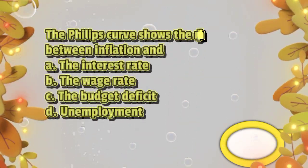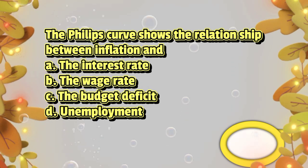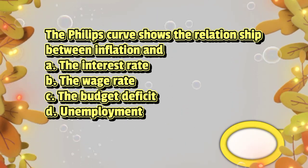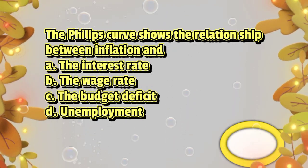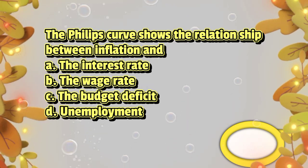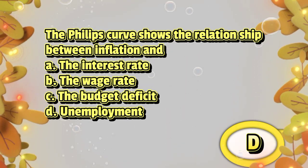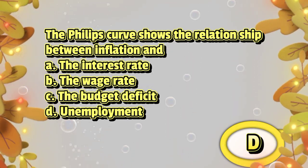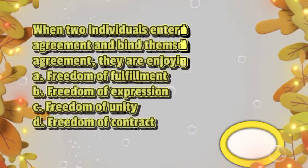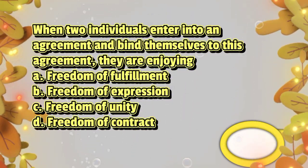The Phillips curve shows the relationship between inflation and: A. the interest rate, B. the wage rate, C. the budget deficit, D. unemployment. The answer is letter D.